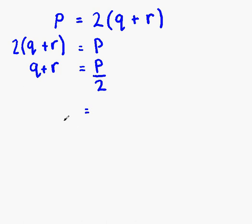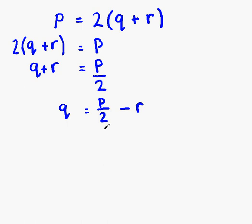We want q as the subject, so the next thing we're going to move is the plus r. If we change its side, it changes to minus r. So we have q on the left-hand side, and p over 2 minus r on the right-hand side — change side, change sign. We now have q as our subject. Our formula is q equals p over 2 minus r. And that's our answer.